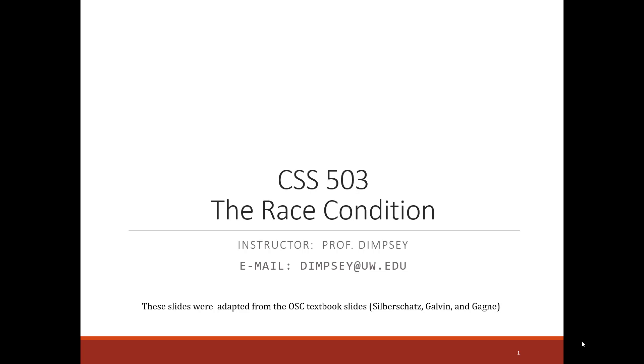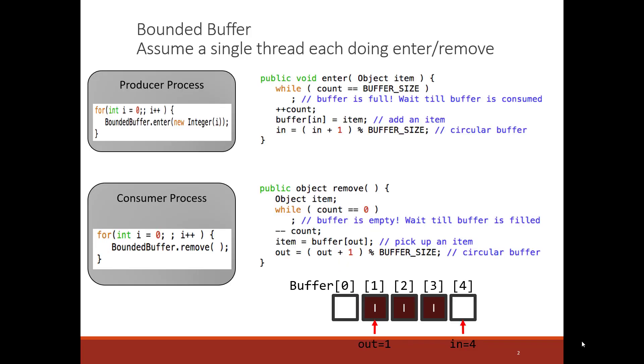The best way to understand is through an example. I have some code here on the right of a bounded buffer. That is, there's a single buffer. One method puts objects into the buffer, another method removes objects from the buffer. Those are called enter and remove. Take a look at the code for a second, let me explain it.